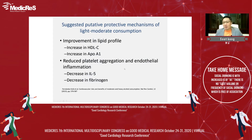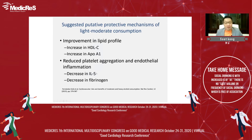There are many suggested so-called protective mechanisms of light to moderate consumption of alcohol. I'll just list a few. The main things discussed in the literature are these two: improvement in lipid profile — i.e., increase in the good cholesterol, HDL cholesterol, and increase in APO A1. Also, light to moderate consumption has been associated with reduced platelet aggregation and reduced endothelial inflammation, with decreases in bad actors such as interleukin-6 and fibrinogen.